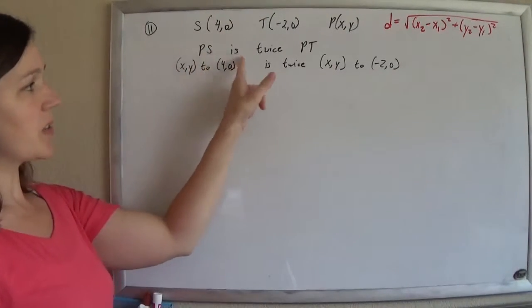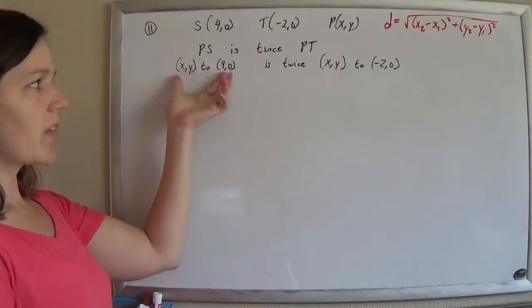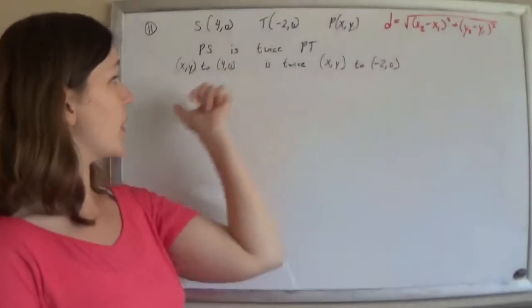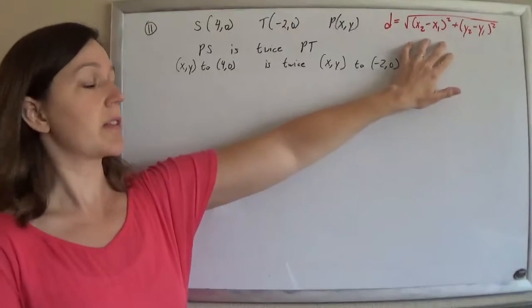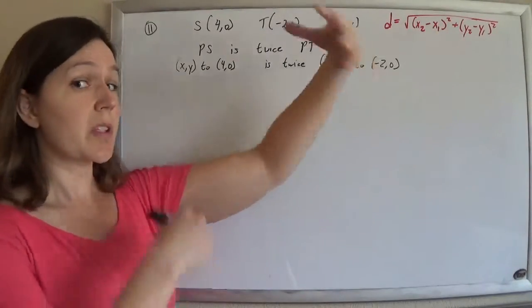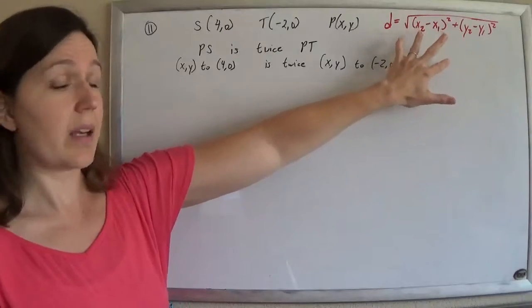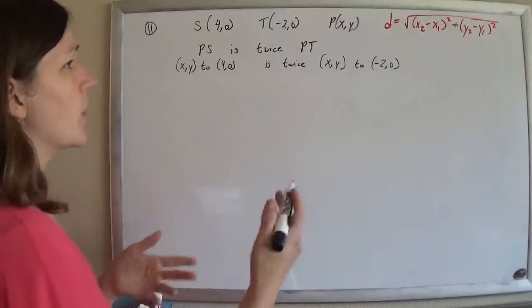They're saying that the length of PS is twice PT. So if I want to find the length of PS, I can use my distance formula. I've got two points, plop them into my distance formula. And remember, distance formula just comes from Pythagorean theorem, so even though it's big and clunky, it's not too bad to memorize or just to know.